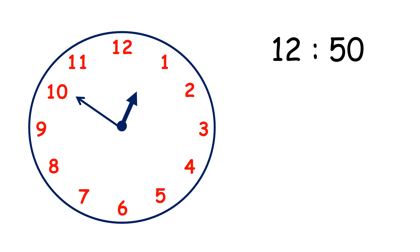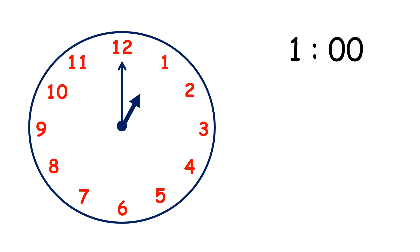Now the minute hand is on the 10 — it's 12:50, because 10 times 5 is 50. Now with our minute hand on 11 the time is 12:55. And with our minute hand back on 12, we don't say the time is 12:60 — we say that the time is 1 o'clock. So when the minute hand is pointing to 12, it's always an o'clock time.